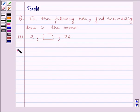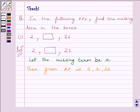Let us start with the solution now. Now, first of all, we will rewrite the AP given in the question. That is 2, blank box, 26. We have to find the second term as second term is missing. So, let us assume that the missing term is X. Then, the given AP is 2, X, 26.